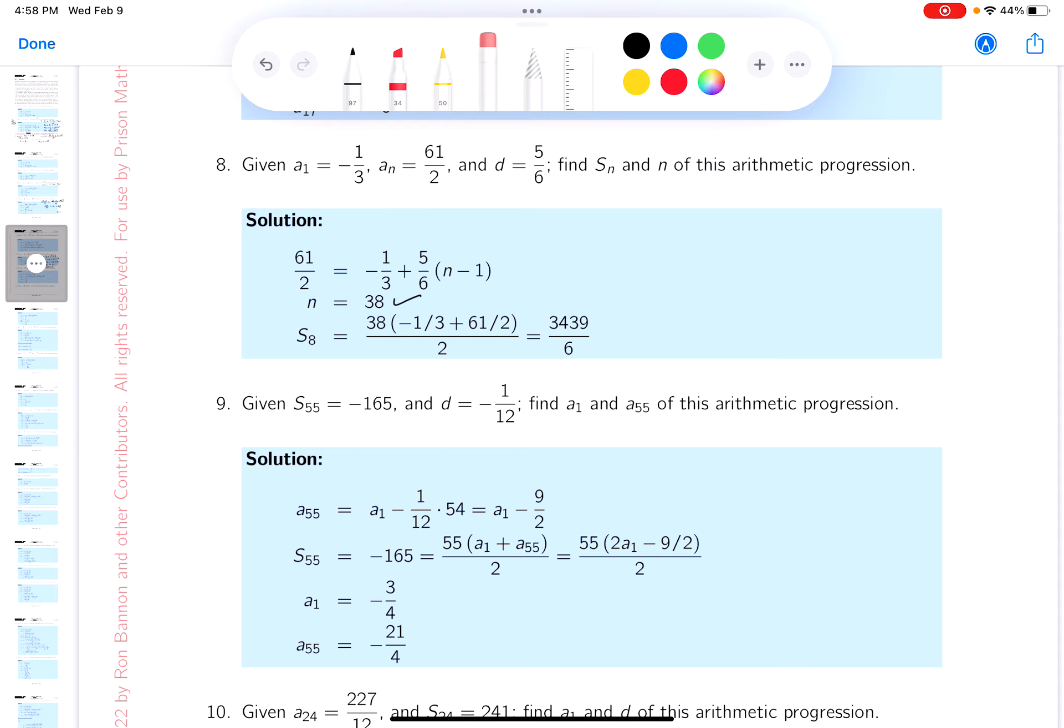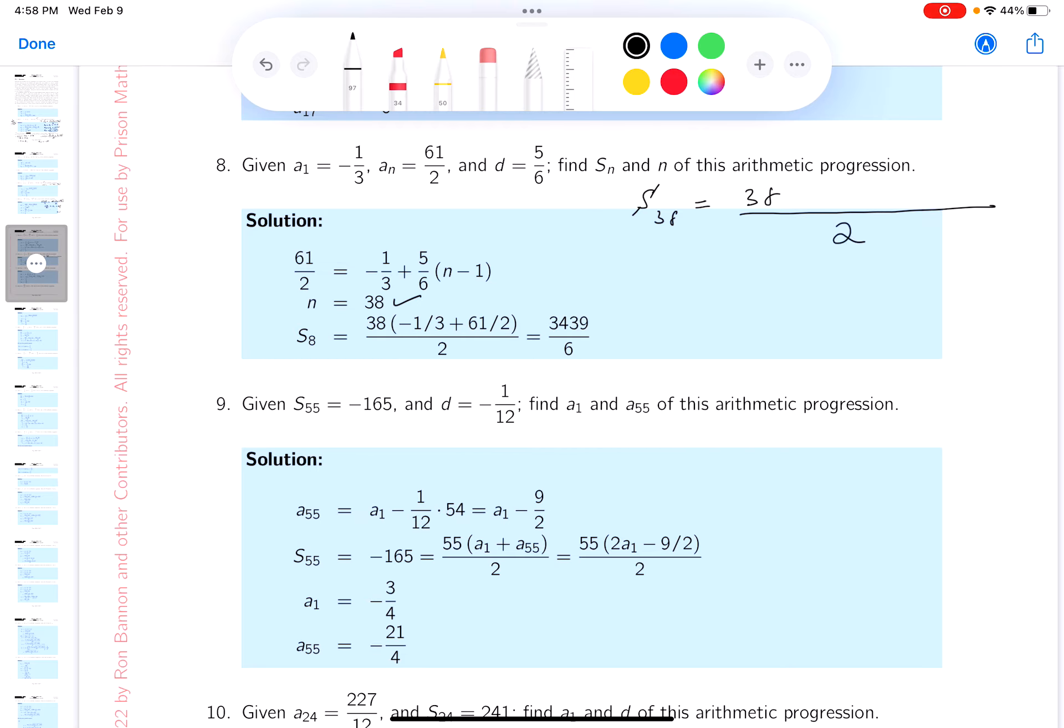Next question is, can I find S_n? I know what n is, by the way, so let's write this down. Let's see what you got. So S_38 is 38, it's gonna be 2, and it's gonna be a_1, which is minus 1/3, plus—and now it's going to be that a_n thing, which is a_38, which is gonna be 61 halves.